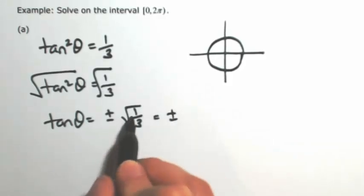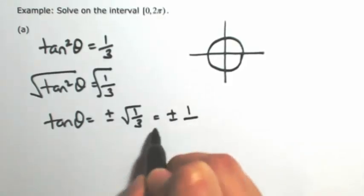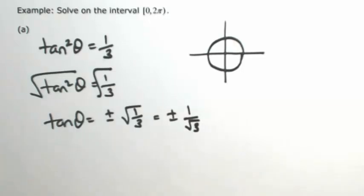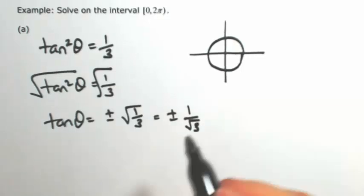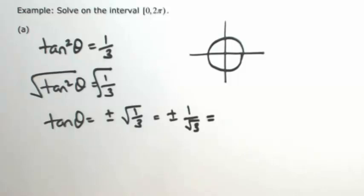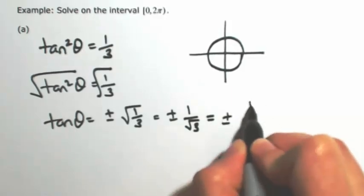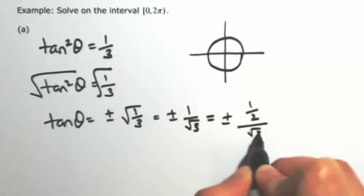So this is plus or minus, square root of 1 is 1, and square root of 3 is square root of 3. Keep in mind how the points on the unit circle work. Anytime you have a square root of 3 involved, it's actually always over 2. So I'm going to rewrite this as plus or minus 1 over 2, and square root of 3 over 2.